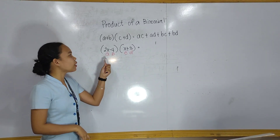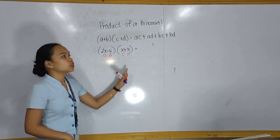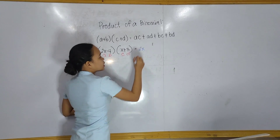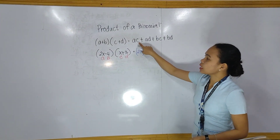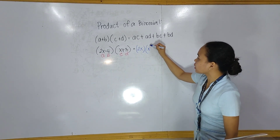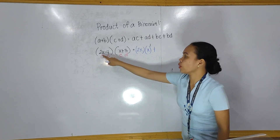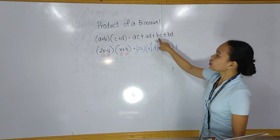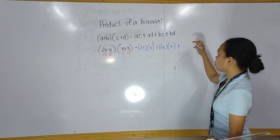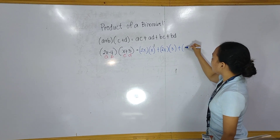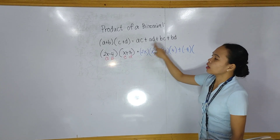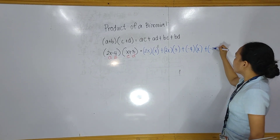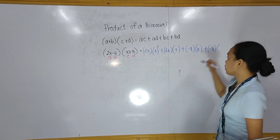Since we have identified the values of a, b, c, and d, we will now follow the formula. So a is 2x, and we multiply it by c, which is x: 2x times x. Then a times d: 2x times positive 3. Next, b times c: negative 4 times x. And finally, b times d: negative 4 times positive 3.